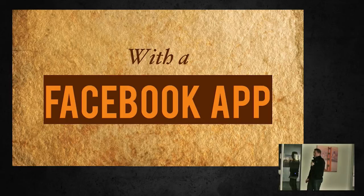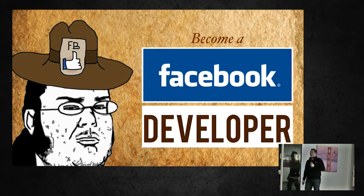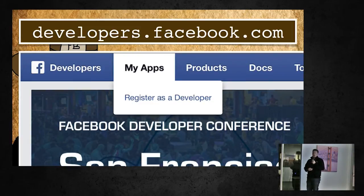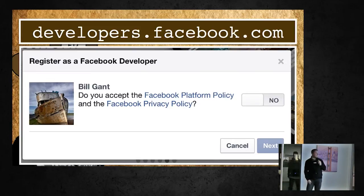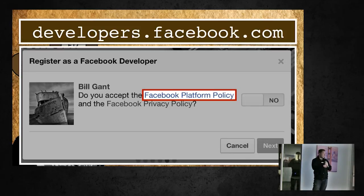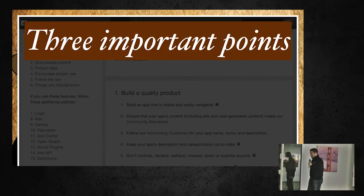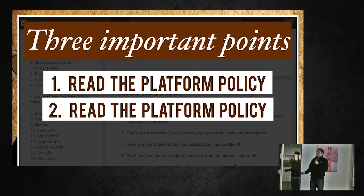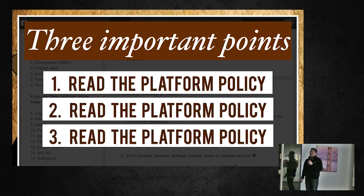How do we access the Graph API? With a Facebook app. But first, we can't just grab stuff off Facebook's platform without registering as a Facebook developer. Go to developers.facebook.com, click 'My Apps,' and if you're not a developer yet, it'll say 'Register as a developer.' Click on that and accept the terms. Don't mindlessly click accept — read the Facebook platform policy. I have three important points: you must read the platform policy, you must read the platform policy, and the most important point is that you must read the platform policy.